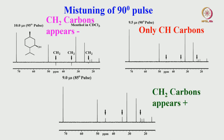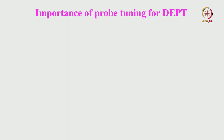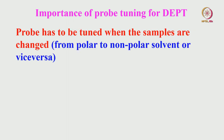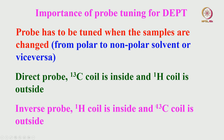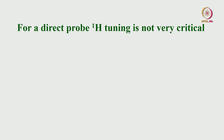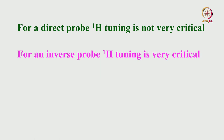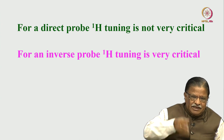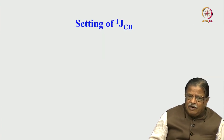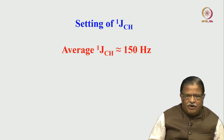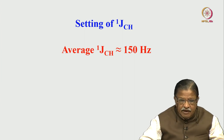There are two types of NMR probes: direct detection probes where the ¹³C coil is inside and the proton coil is outside, and indirect detection (inverse) probes where the proton coil is inside and the ¹³C coil is outside. For direct probes, tuning is not very critical. For inverse probes, tuning is very critical—slight variation in the flip angle can cause CH₂ peaks to appear as positive or negative when only CH peaks should appear. Additionally, the J-value setting is important: the average ¹J_CH is taken as 150 Hz, but if the actual coupling deviates significantly—for example, a C-H coupling of 240–250 Hz as in some specialized carbons—the CH peak may not appear in DEPT-90 or DEPT-135, causing artifacts.